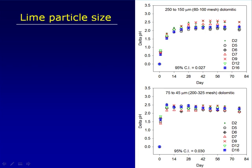There was even greater consistency when we had a 200 to 325 mesh screen, shown in the bottom right graph, where the variation between the most reactive and least reactive dolomite was by plus or minus about 0.15 units from the mean.